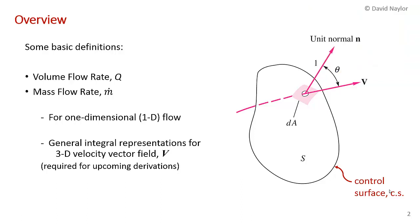I'm going to start with a very simple case. We talked about this approximation in the previous video. I'm going to start with one-dimensional flow, and this is the approximation we're probably going to make in most of the calculations in this course. And then I'm going to talk about the general integral representations for a general three-dimensional velocity field.